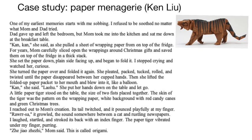She turned the paper over and folded again. She pleated, packed, tucked, rolled, and twisted until the paper disappeared between her cupped hands. Then she lifted the folded-up paper packet to her mouth and blew into it like a balloon. 'Come,' she said. 'Lao hu.' She put her hands down on the table and let go. A little paper tiger stood on the table, the size of two fists placed together. The skin of the tiger was the pattern on the wrapping paper — white background with red candy canes and green Christmas trees. I reached out to mom's creation. Its tail twitched and it pounced playfully at my finger. 'Rauza,' it growled, the sound somewhere between a cat and rustling newspapers. I laughed, startled, and stroked its back with an index finger. The paper tiger vibrated under my finger, purring.